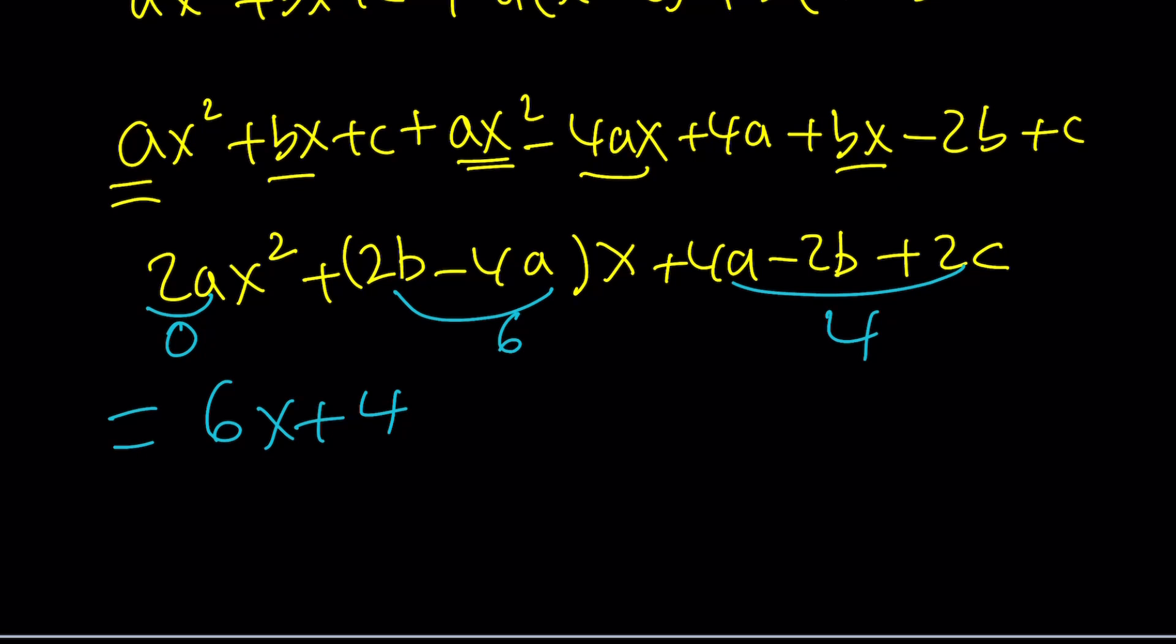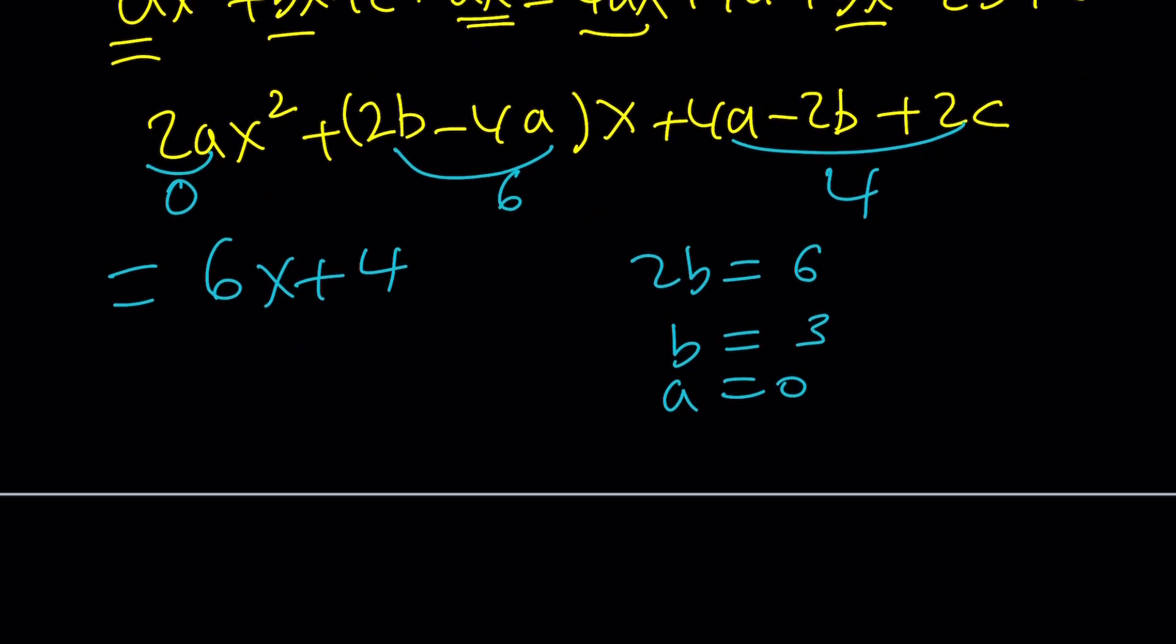And obviously, higher degrees won't work either. But if you solve this equation for a = 0, you're going to get 2b = 6, which is b = 3. And a = 0. Remember, if a is 0, you're going to get from the third equation, 4(0) - 2b, which is 6, plus 2c = 4.